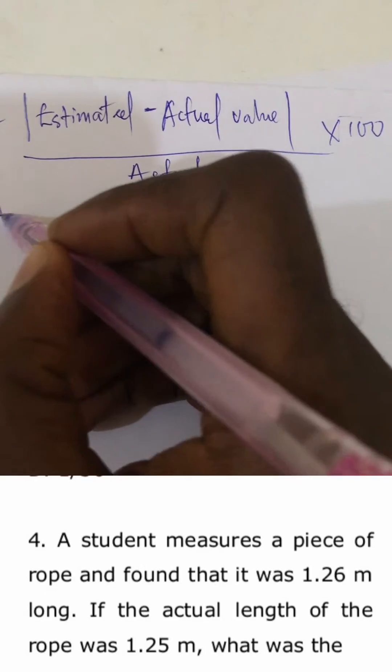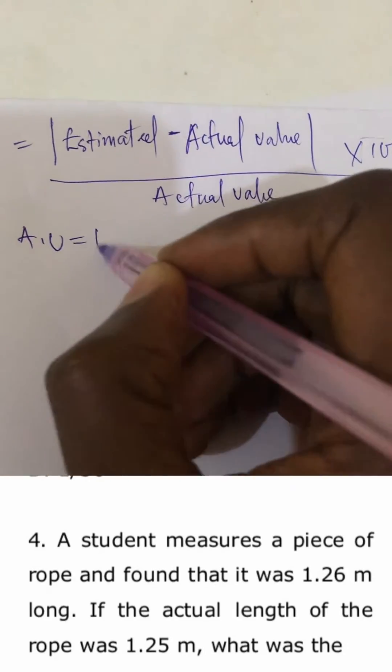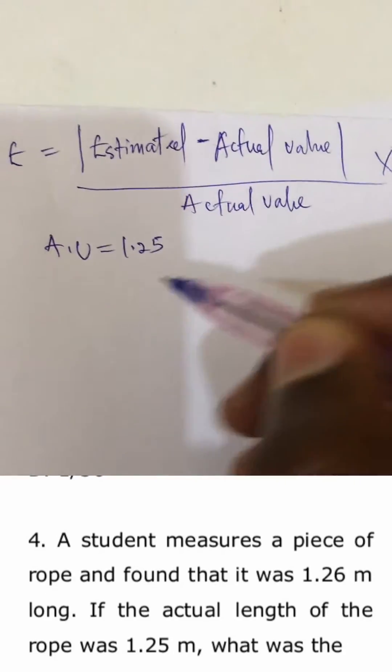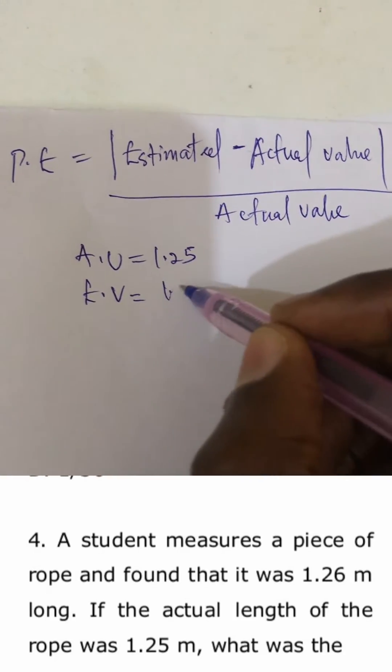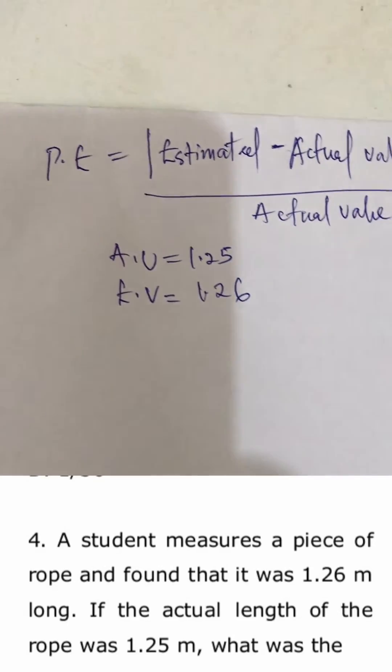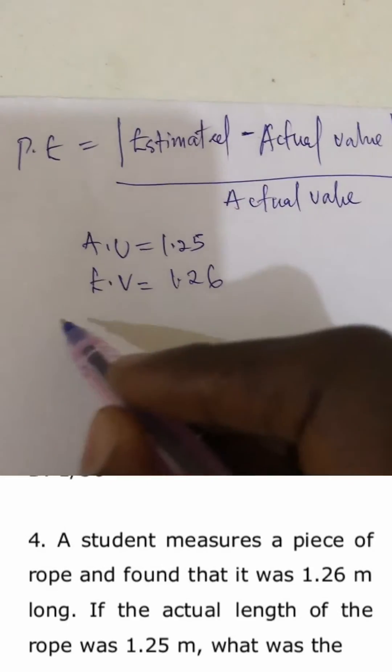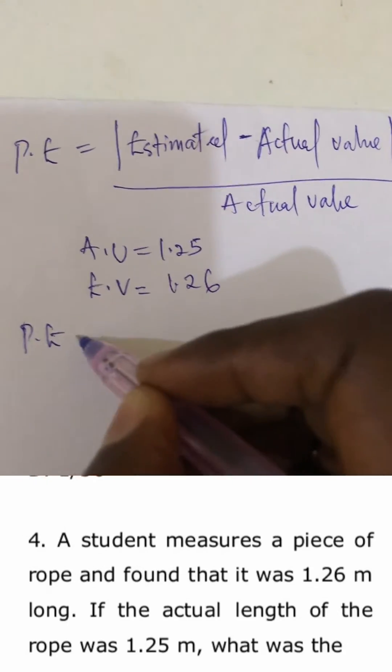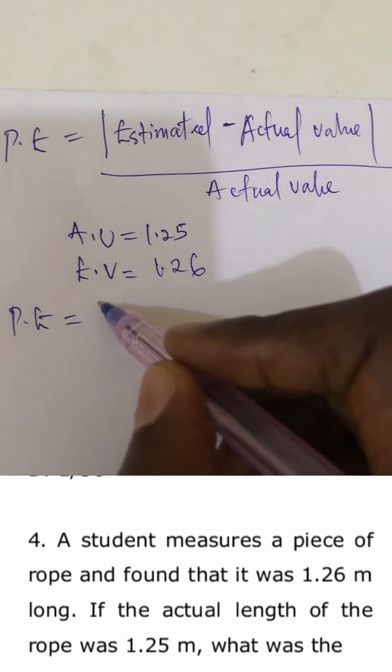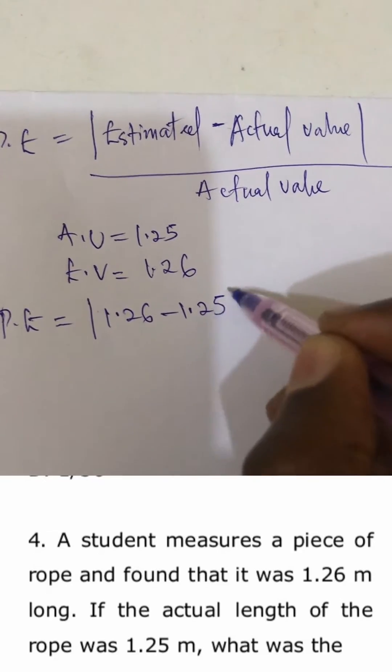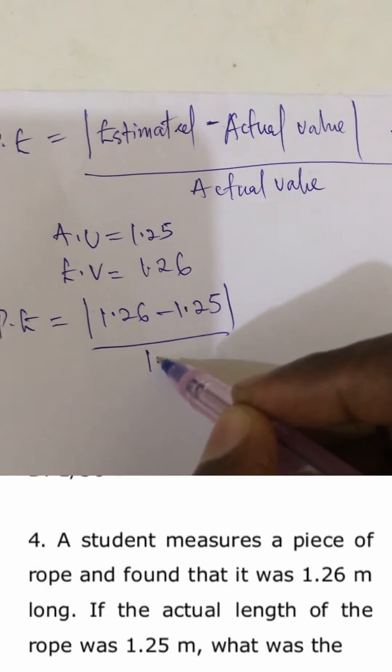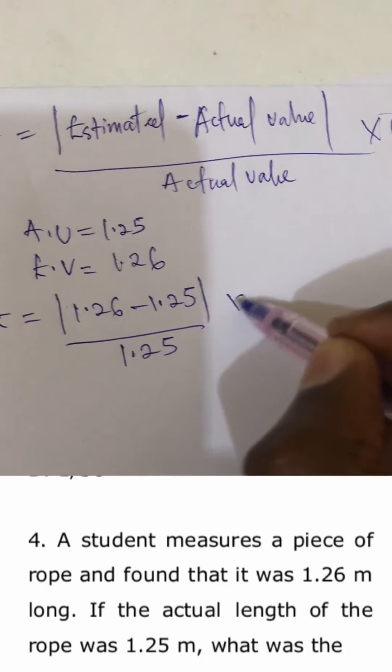That means the actual value is 1.25, the estimated value is 1.26. Now calculating the percentage error, we have that our percentage error equals the estimated value which is 1.26 minus 1.25 over 1.25 times 100.